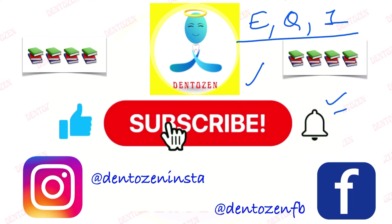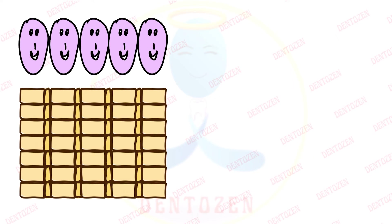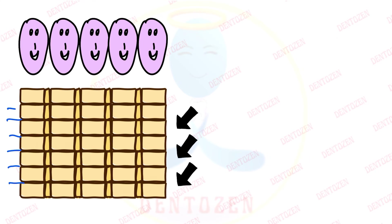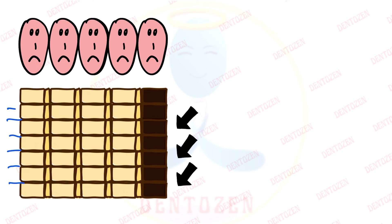Enamel is formed by ameloblast cells in increments in rod segments. Sometimes these rod segments pass through planes of tension. When there is tension in that area, just like when we are stressed and cannot study properly, the ameloblast cells are not able to work properly. So some of these rod segments will not receive their proper calcium — they will remain less calcified and appear as dark areas.